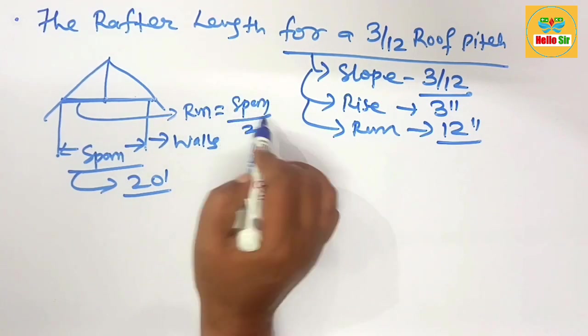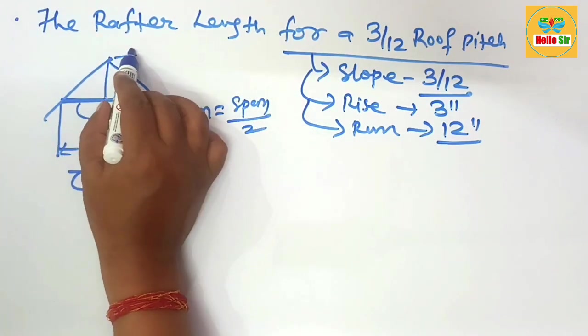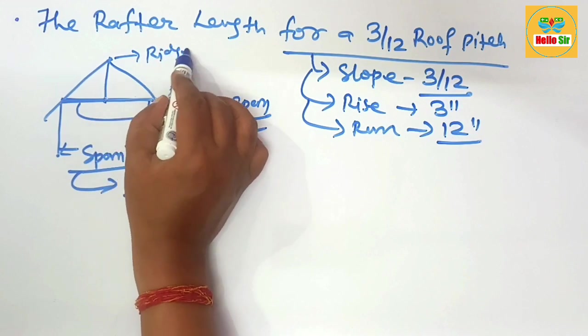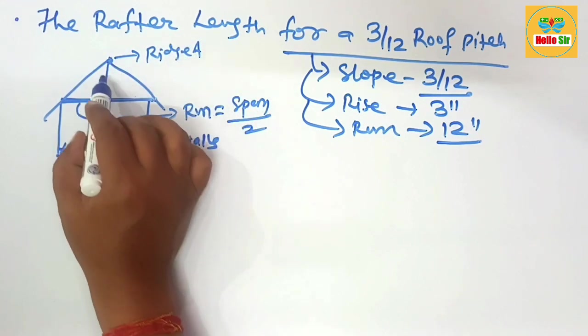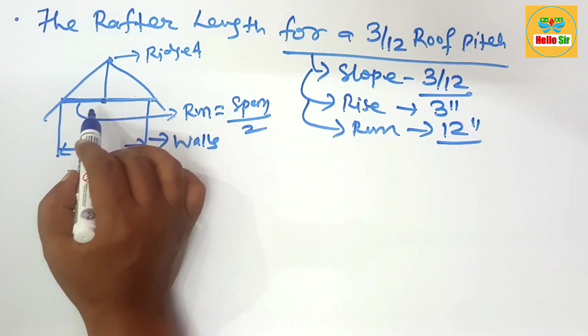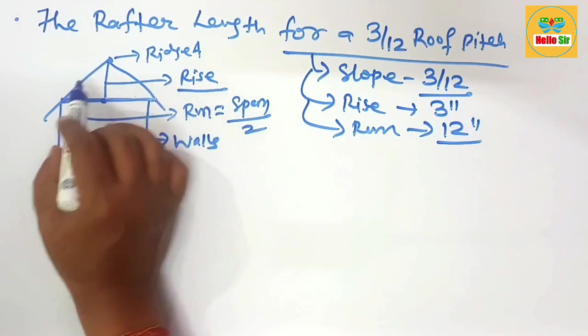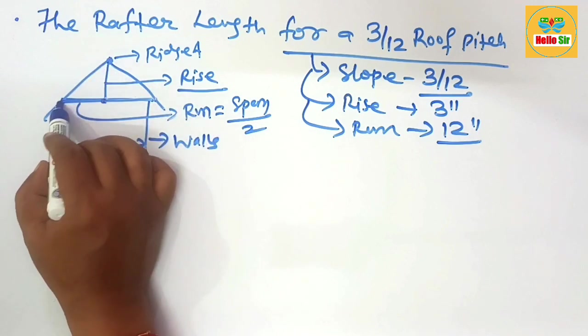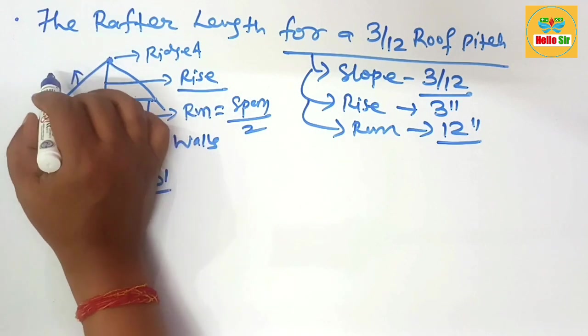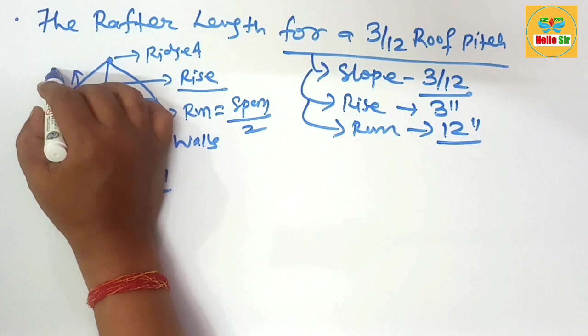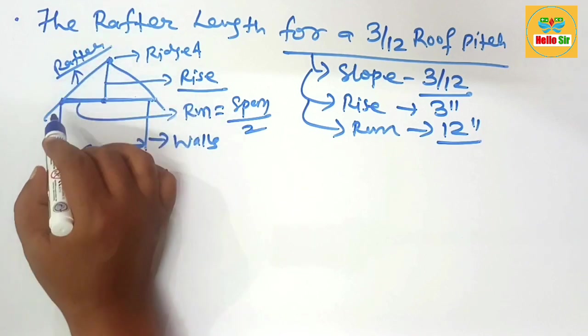Span divided by 2 is the run, and this is the ridge area. From the ridge area, a vertical line that connects the center of the span is known as the rise. From ridge area to the wall plate, this sloped structure running is called the rafter.